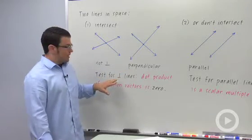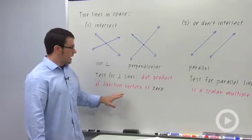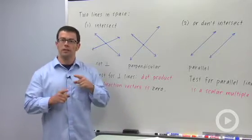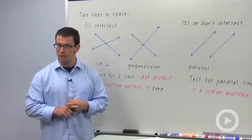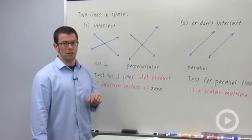Now the test for perpendicularity is that the dot product of the direction vectors of the two lines has to be zero. Remember if the dot product of two vectors is zero, they're perpendicular. So if the direction vectors of two lines are perpendicular, then the lines are perpendicular.